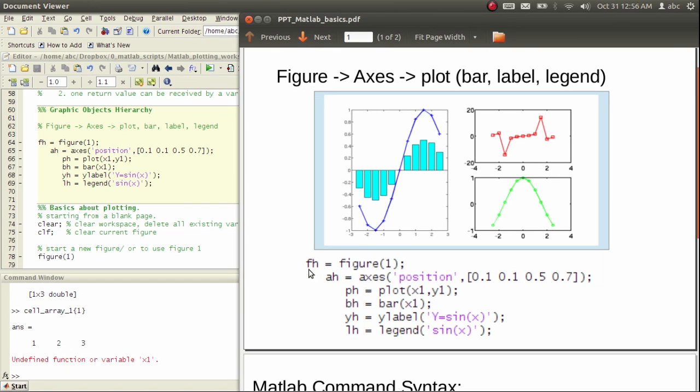So here, FH is a figure handle. AH is axes handle. PH... sorry, it's not F, it's H. Bar H, bar handle, Y label handle, and legend handle.